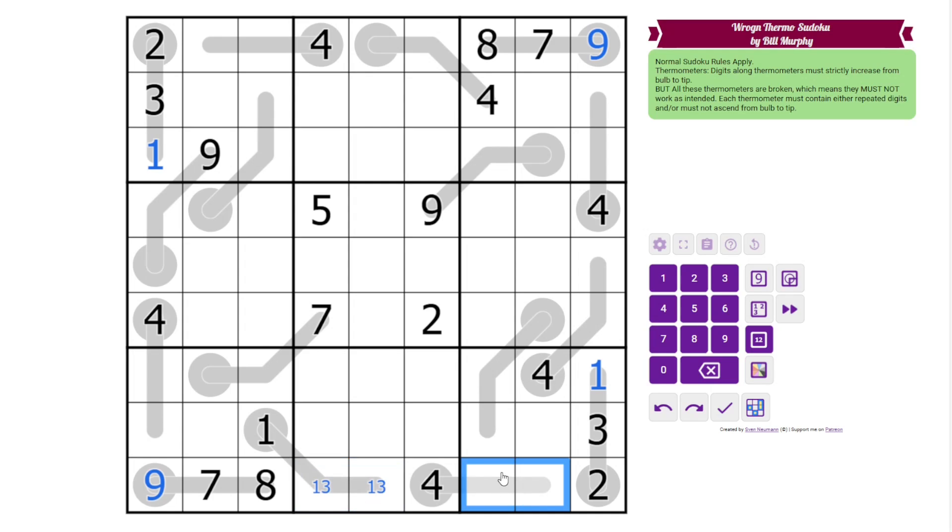The remaining digits are 5 and 6. But if this were 4, 5, 6, that would be a valid thermo. So this must be 4, 6, 5. Up here, where does 4 go in this box? It has to go here. 7 and 8 can't go there, so this is 7, 8. And we know the order from these.